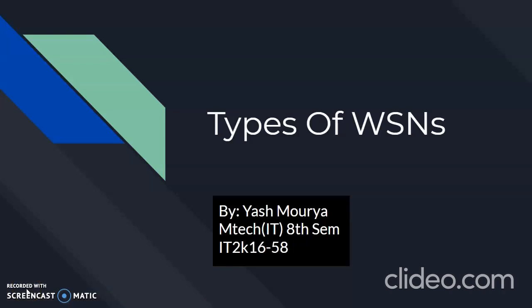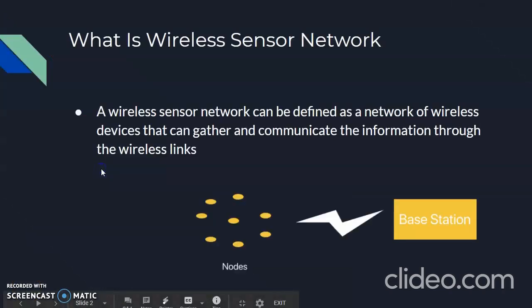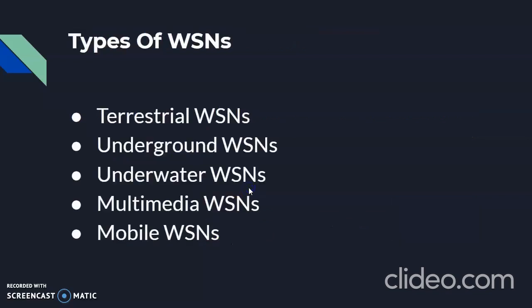First, let's look at what WSN is. WSN stands for Wireless Sensor Network. The wireless sensor network can be defined as a network of wireless devices that can gather and communicate information through wireless links. It is a collection of sensor nodes that can be used to sense the environment and gather information, which can be further processed.